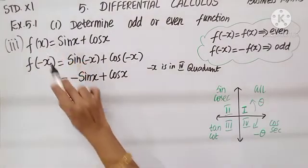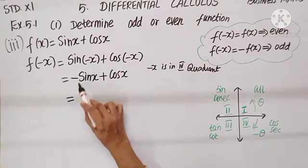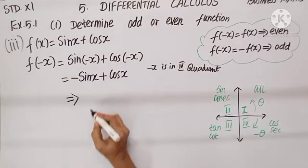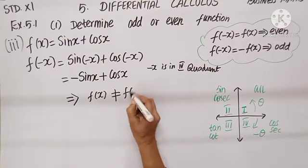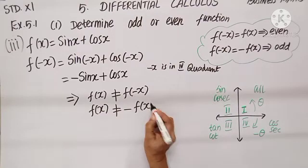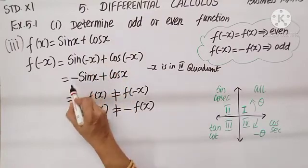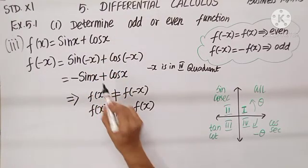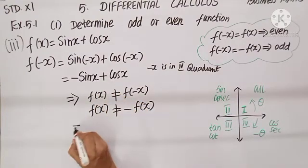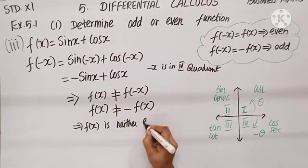Now look at f(x) and f(-x). They are not the same, and the sign has not changed entirely either. This implies f(x) is not equal to f(-x), and f(x) is not equal to minus f(x) either — because if it were f(x), both terms should be positive, and if it were minus f(x), both terms should be negative. But that is not the case. So we declare f(x) is neither even nor odd.